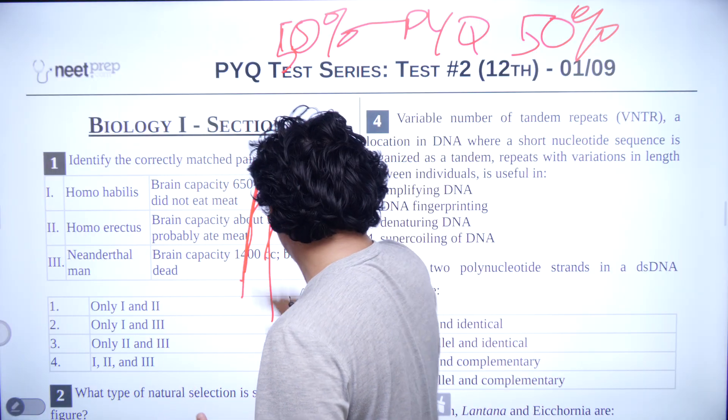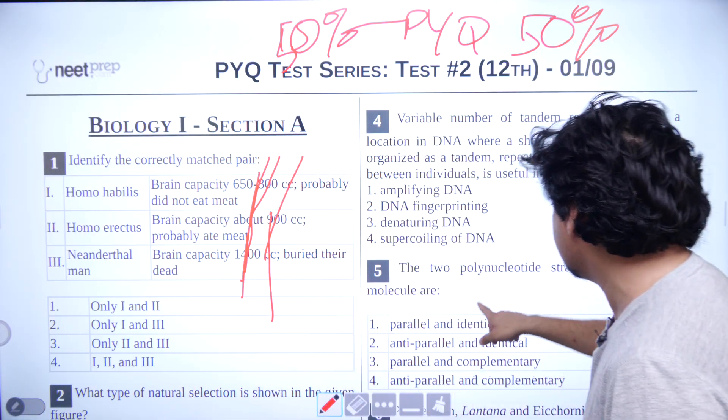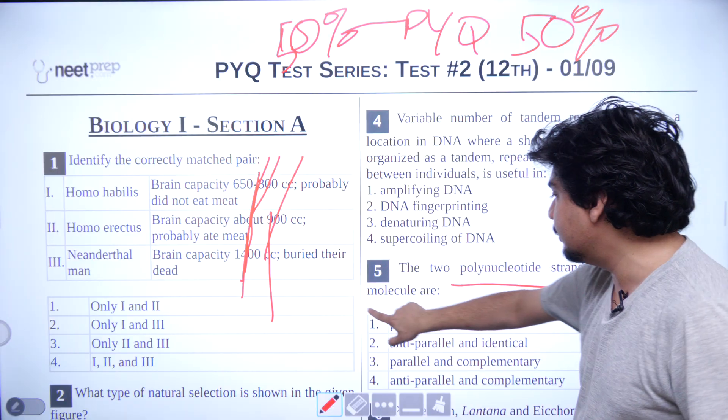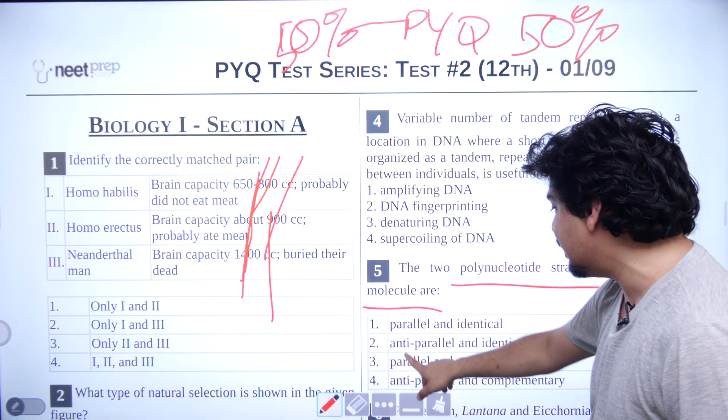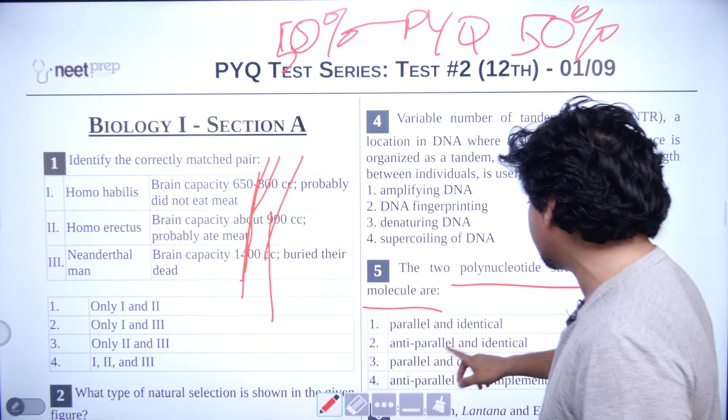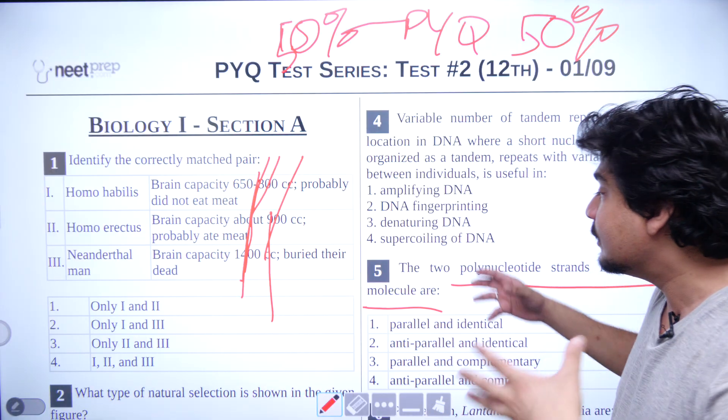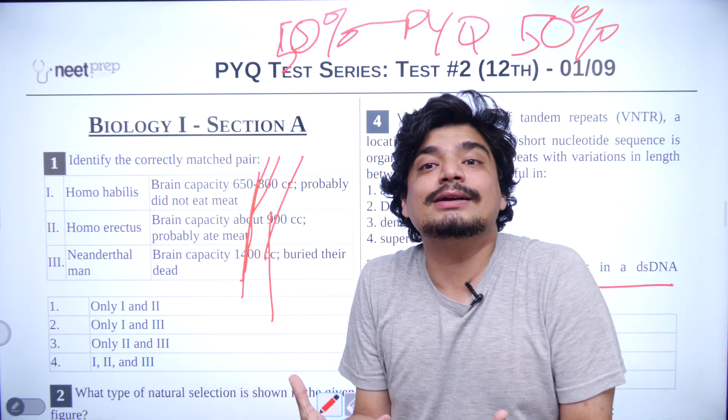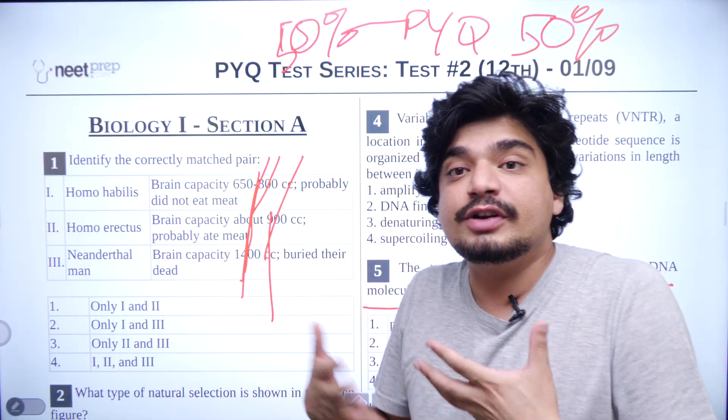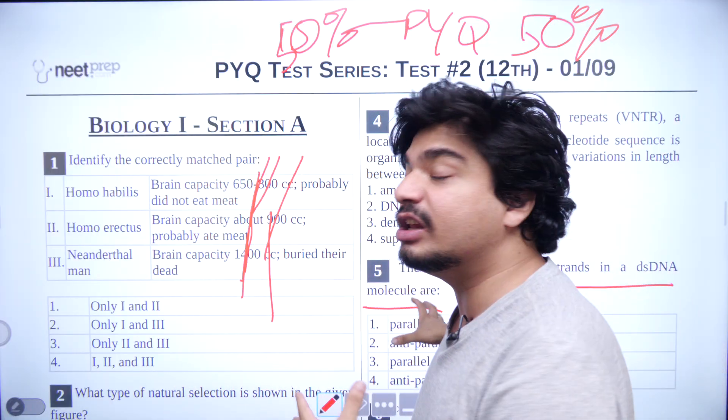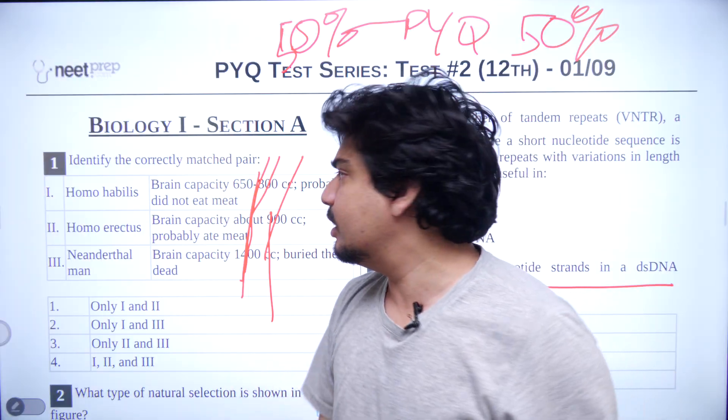For example, as far as biology is concerned, if we take this two polynucleotides stand in DSDNAs, parallel and identical, anti-parallel and identical, parallel and complementary, anti-parallel and complementary. This is picked up from NCERT. This can be a previous year question. I mean, it's not a previous year question. The actual question in NEET exam are very similar to this of this level.